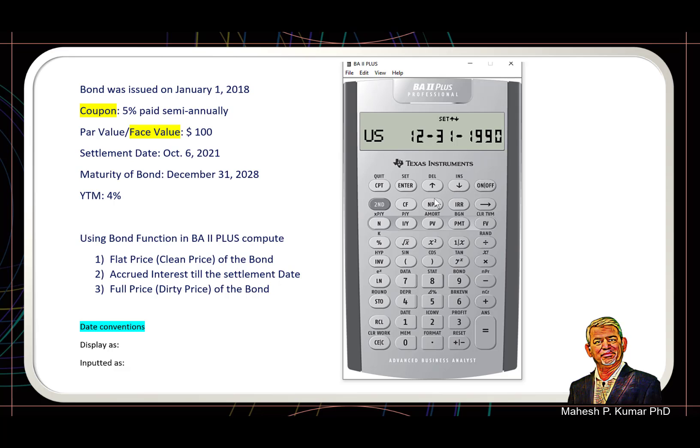But we will be in this question using the US date convention, so we will click second and set again. We are back into European date convention. Second and quit. Through this exercise, what we did—we actually wanted to make sure that we are in US date convention.